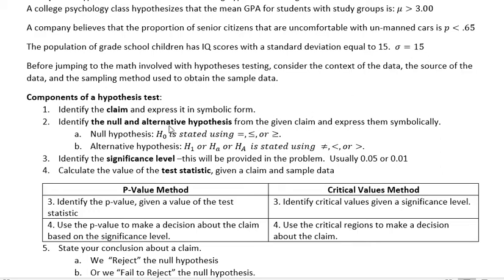Identify the null and alternative hypothesis from the given claim and express them symbolically. The next video is entirely set aside to identify the null and alternative hypothesis. The null hypothesis is stated with H sub zero, and it's always using equal to, less than or equal to, or greater than or equal to — so it always has an equality part to it.